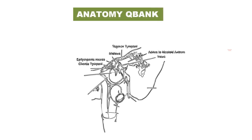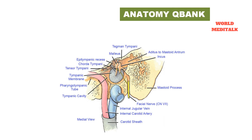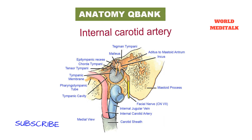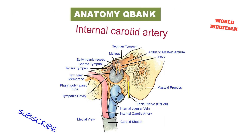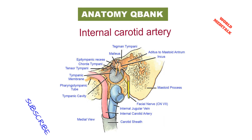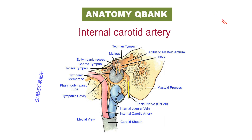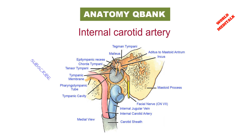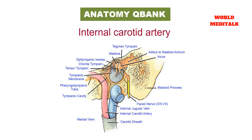The internal carotid artery is formed from the common carotid opposite the upper border of the thyroid cartilage. It extends superiorly to enter the skull via the carotid canal, then passes through the cavernous sinus, above which it divides into the anterior and middle cerebral arteries.